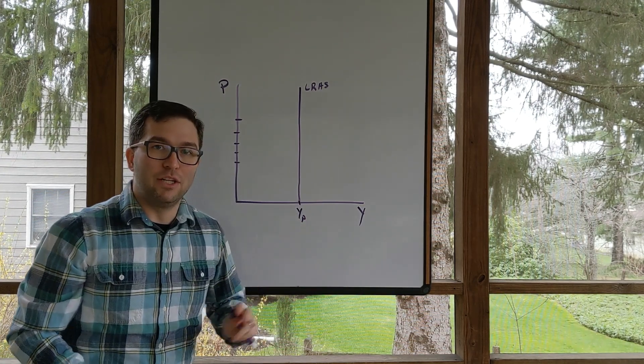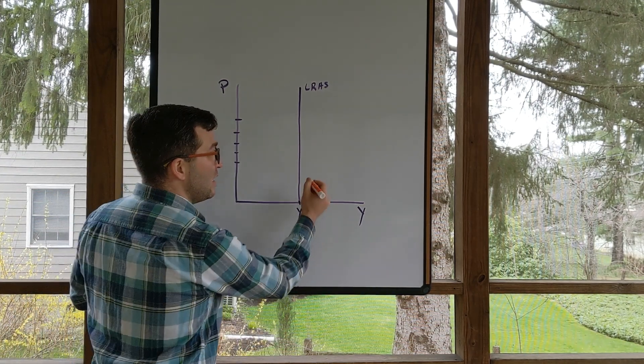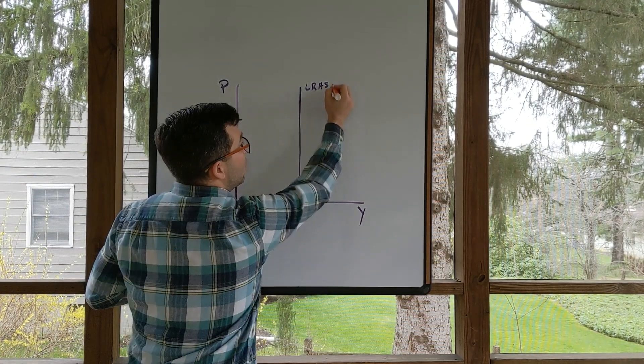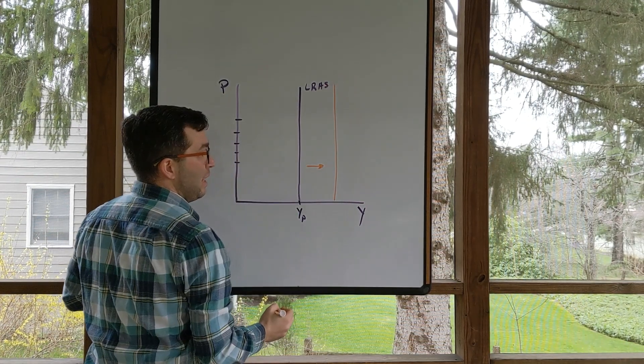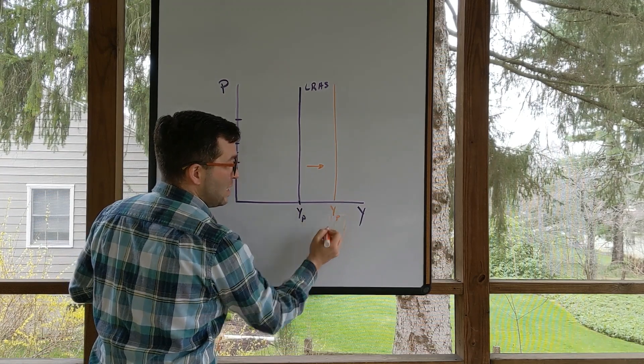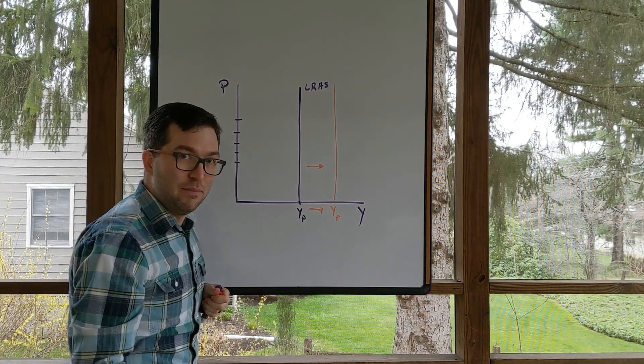All of these things impact our Solow model that we talked about in the growth chapters and will also change our overall potential GDP. We'd see an increase just like with aggregate demand as a shift to the right. So you could see an increase by shifting it to the right, where we'd see a higher level of potential GDP.